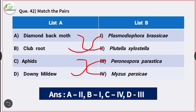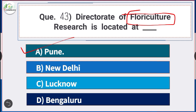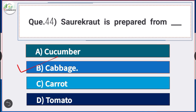Question number 43: Directorate of Floriculture Research is located at — answer option A — Pune. Question number 44: Sauerkraut is prepared from — answer option B — cabbage. Sauerkraut is prepared from cabbage.